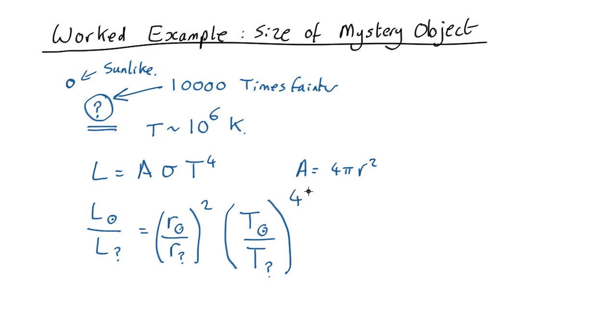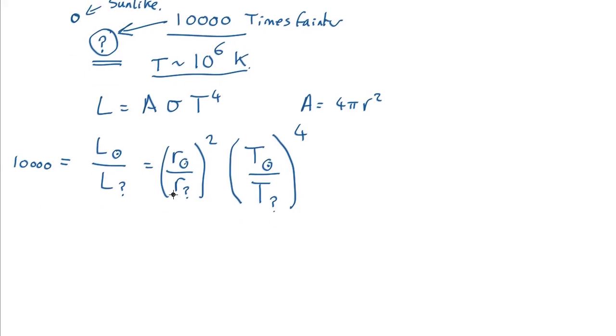Okay, so what can we do with this? Well we know this ratio is equal to 10,000. We know the radius of the Sun-like star because it's the same as the Sun and the temperature of the Sun-like star. We know the temperature of the mystery object because we measured it from our x-ray observations. So the only thing we don't know is the radius of the mystery object. So let's rearrange this to get that as a subject.